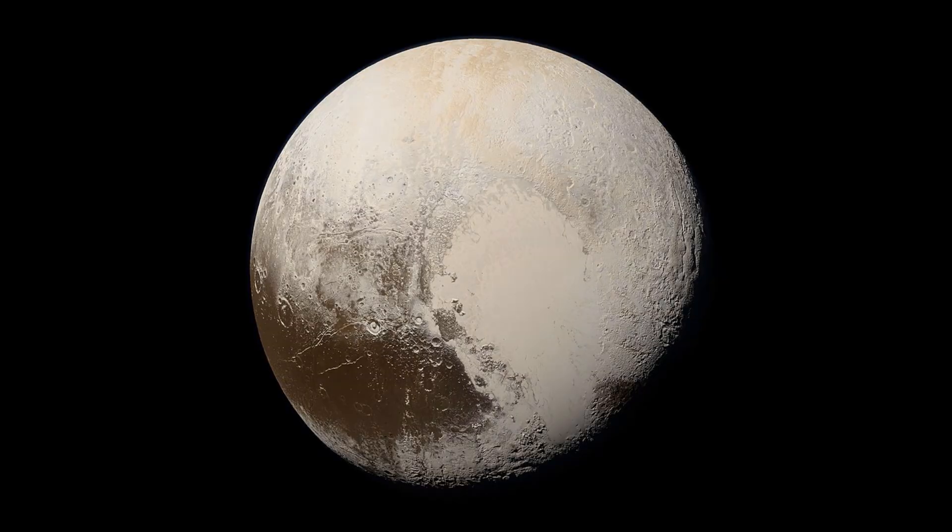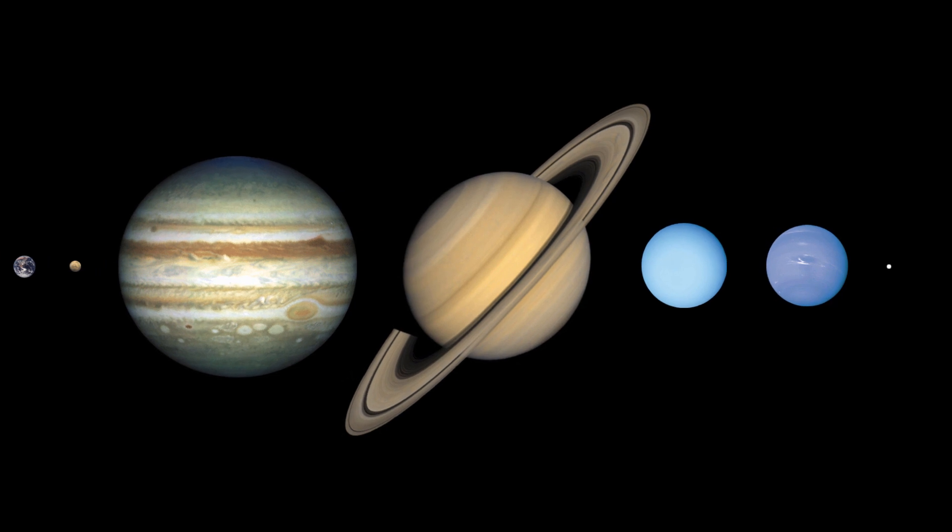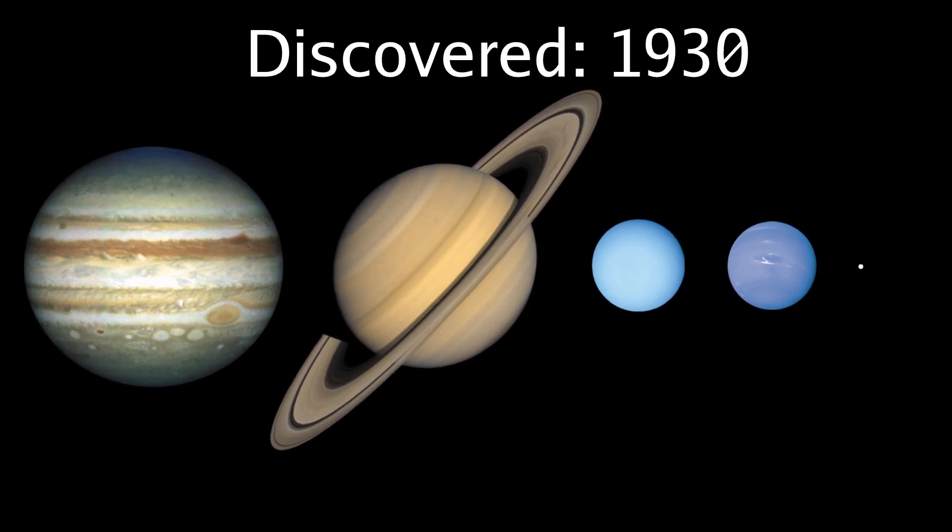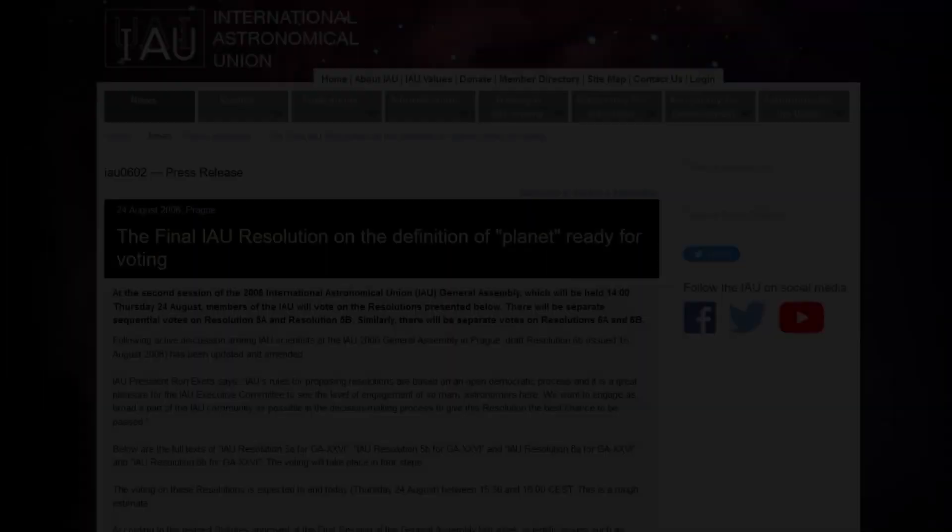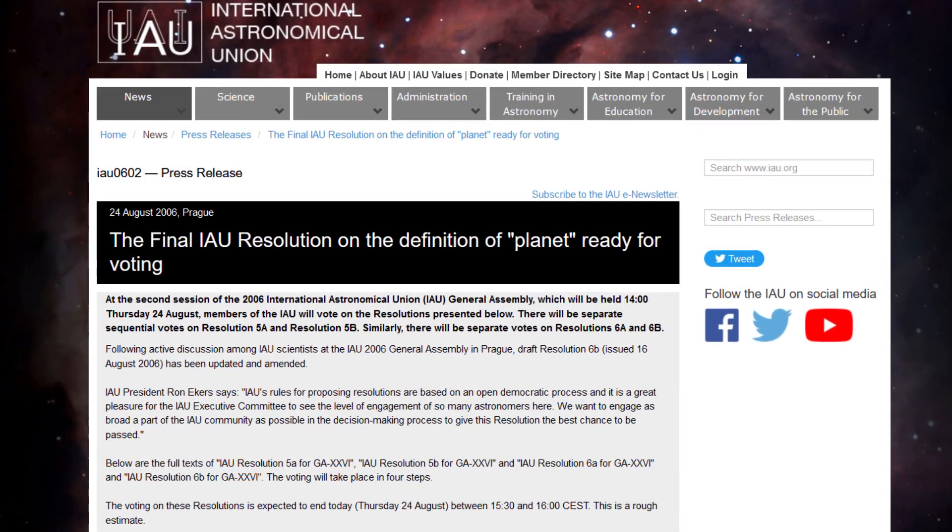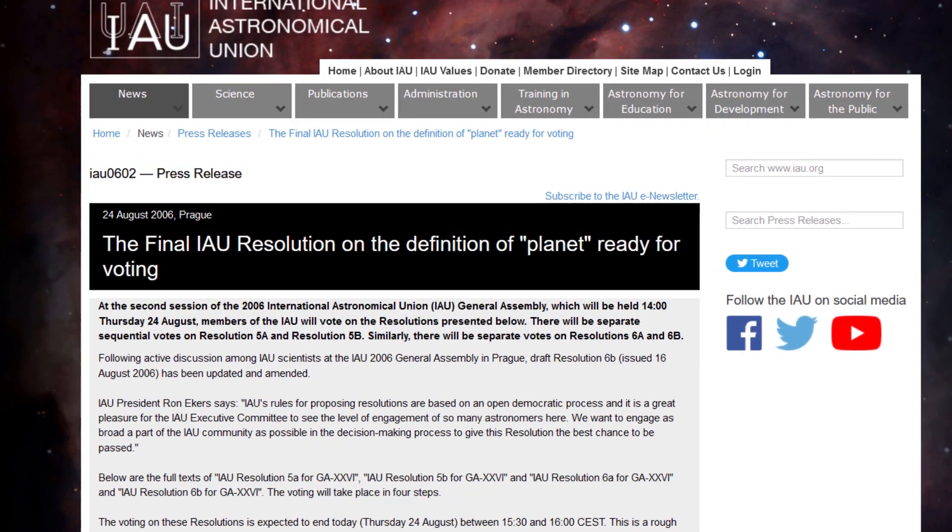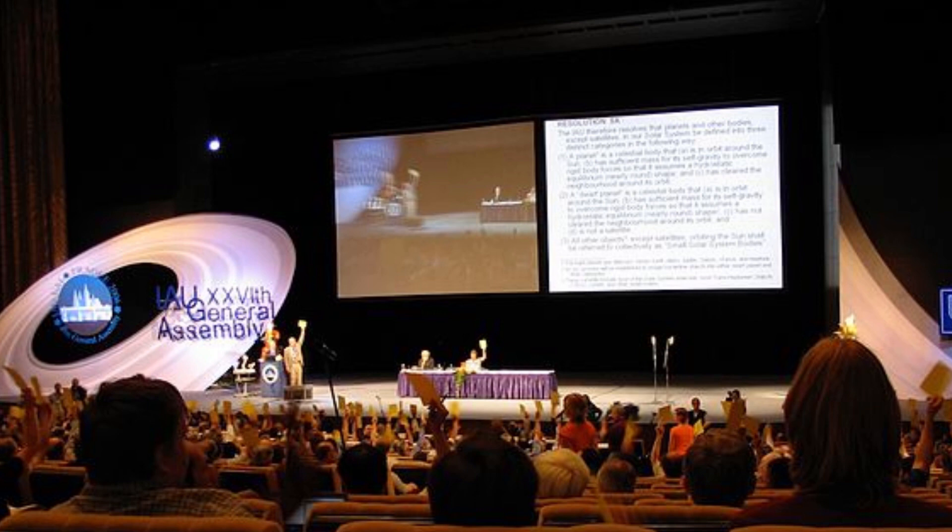As most of us remember, Pluto was considered to be the ninth planet of the solar system from its discovery in 1930 until 2006, when the International Astronomical Union reclassified it as a dwarf planet.